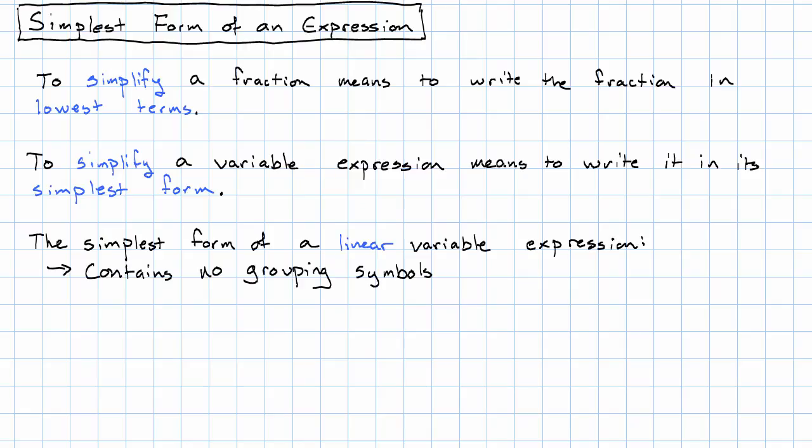For a linear variable expression, the simplest form contains no grouping symbols, so no parentheses, no fraction bars serving as grouping symbols. All like terms have been combined. And finally, all division is written as multiplication.